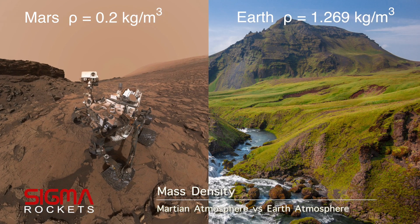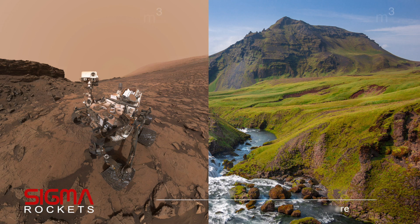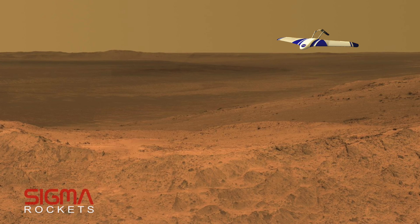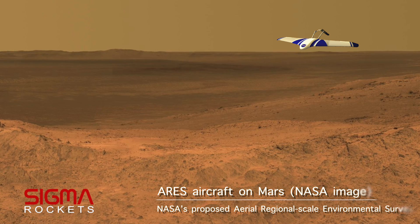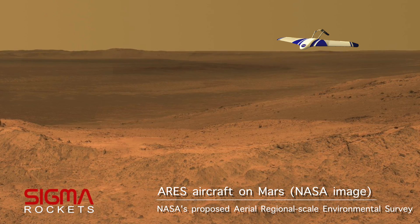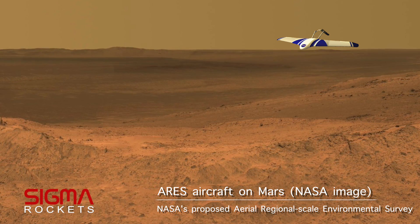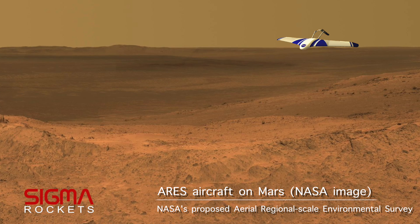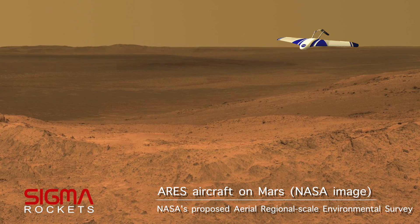Here is a comparison of atmospheric pressure, or mass density of the air, on Mars versus Earth. As you can see, the air is much thinner on Mars. Vehicles moving through the Martian atmosphere would have less aerodynamic drag acting on them as compared to Earth.